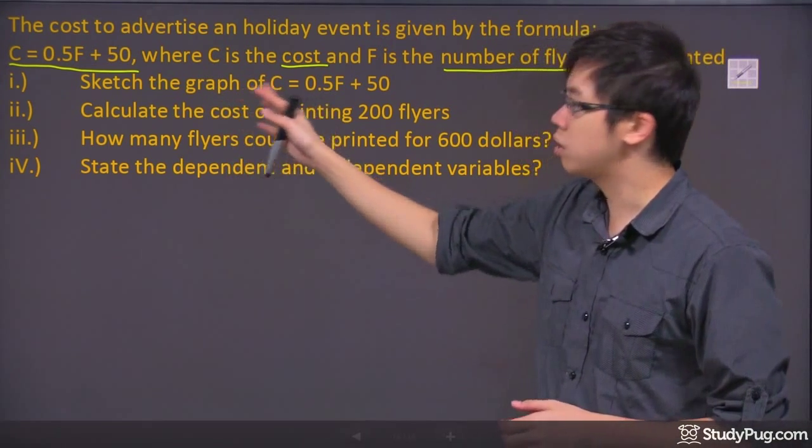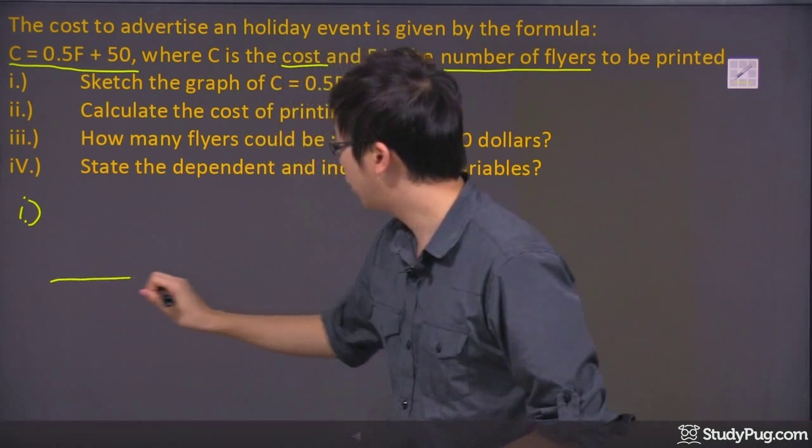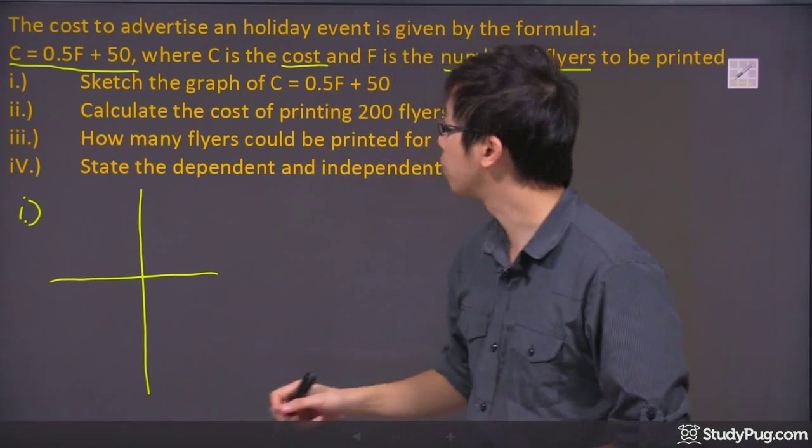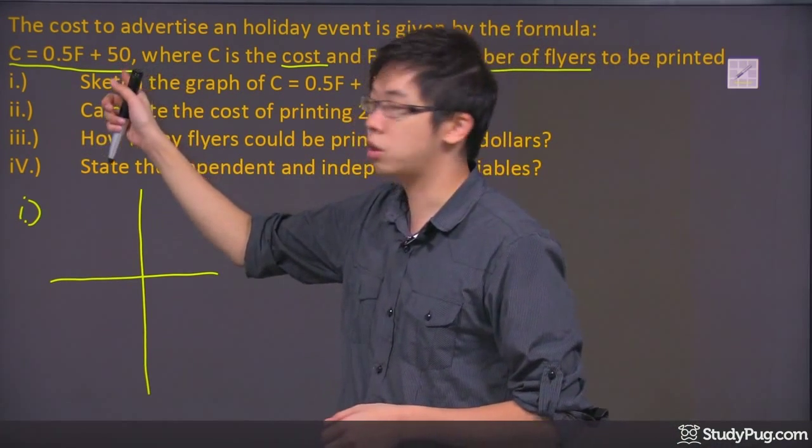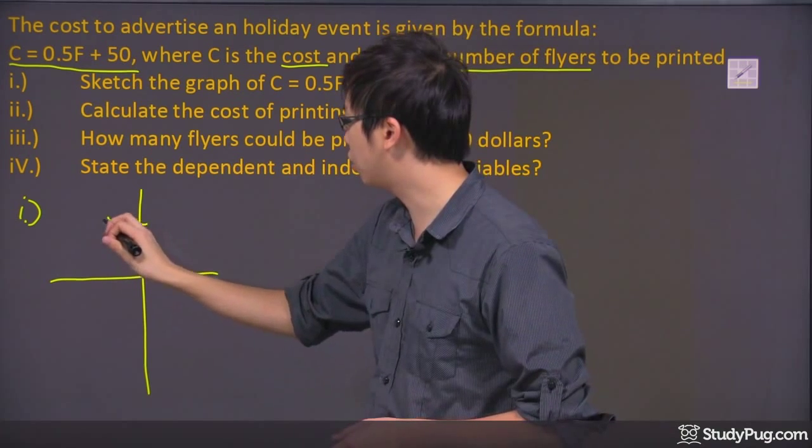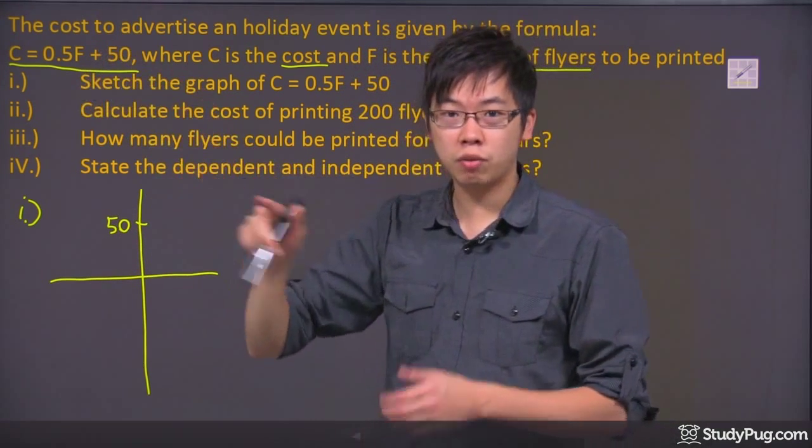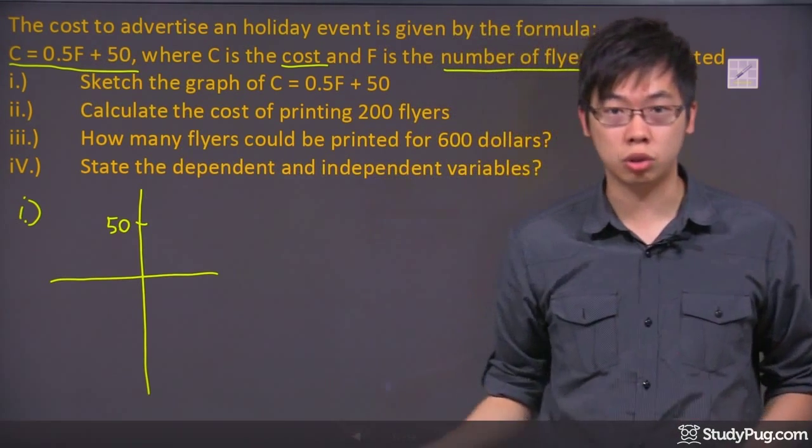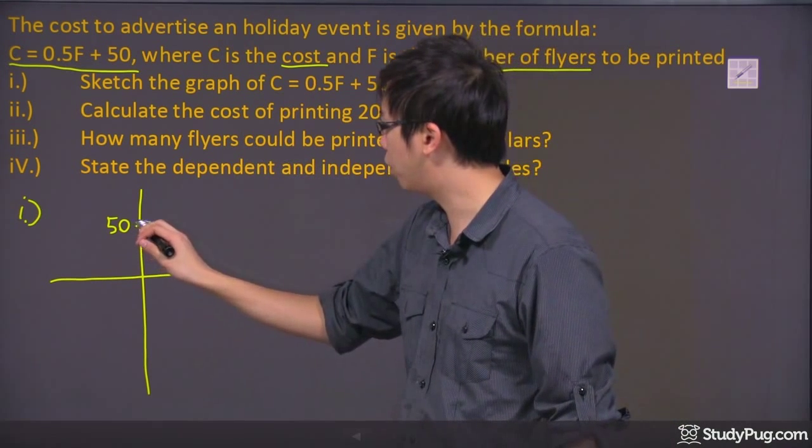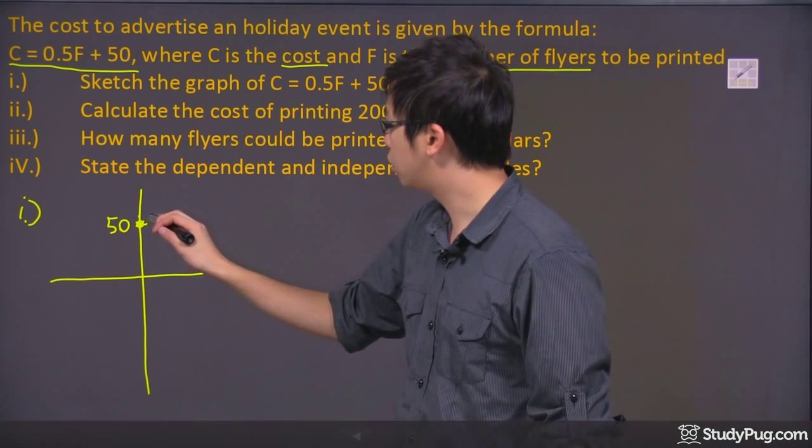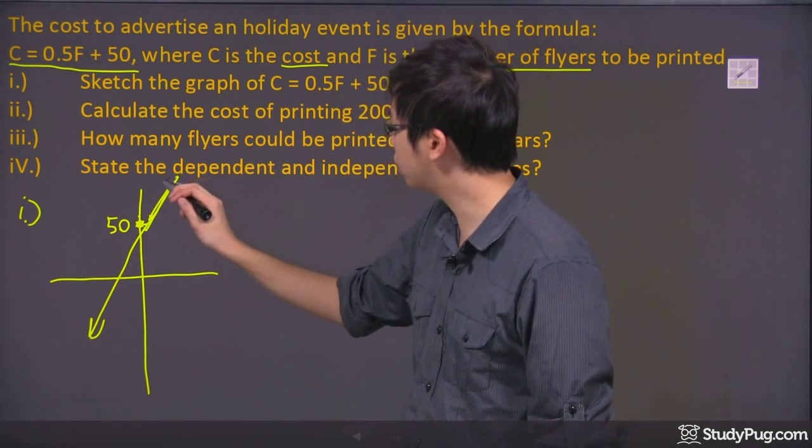So if I go ahead and sketch the graph for number one right here, if I just kind of do a little sketch right here, it is still y equals mx plus b. So the b is the y-intercept, which is 50. So pretend that this is 50 on your grid. So there's your 50 to start off, and the 0.5F, the 0.5 is actually just 1 over 2. So what that means is you're doing up 1 over 2 from this point right here. So up 1 over 2, up 1 over 2. So you get yourself a little graph coming down this way and going up this way.